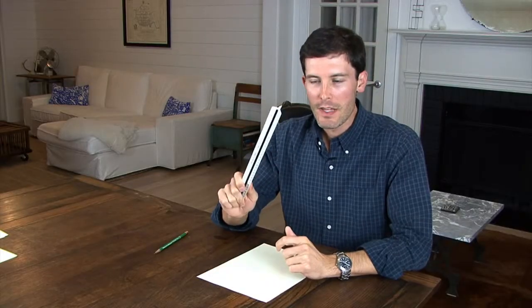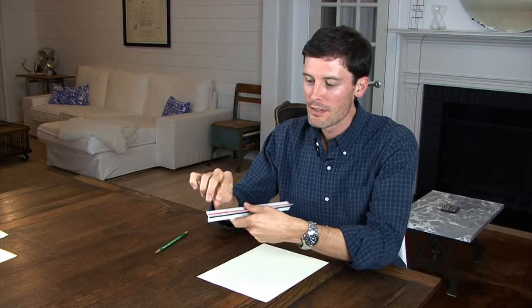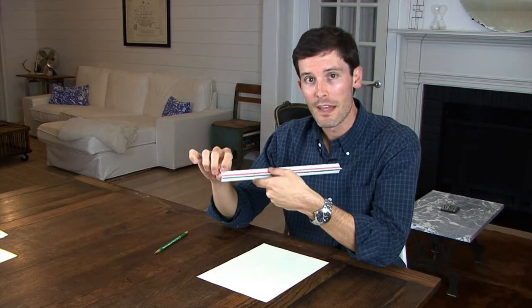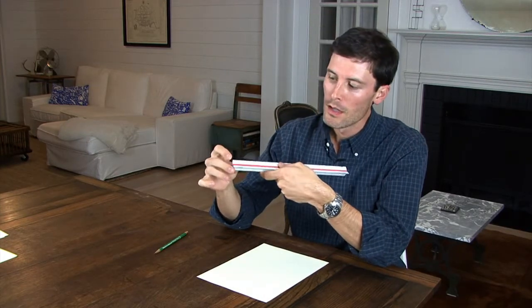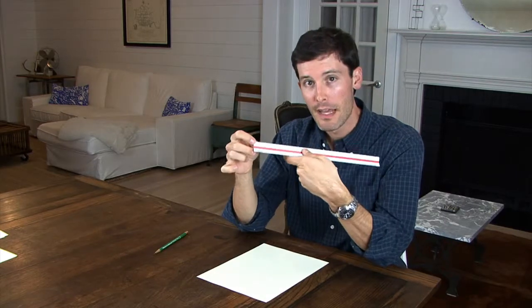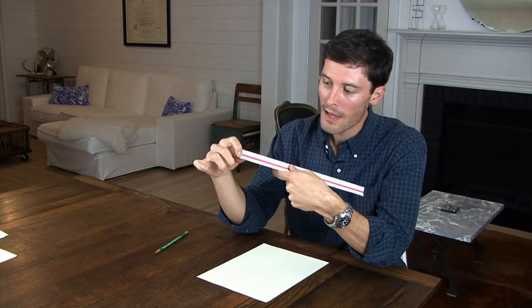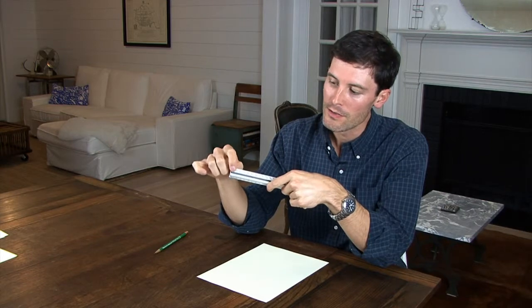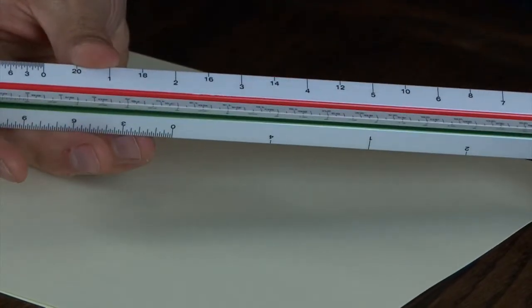An architectural scale has three sides and each edge tells you what scale it is. So this side here is an eighth inch scale, this is a half inch scale, and you can turn it around and you see that each side represents a different scale.